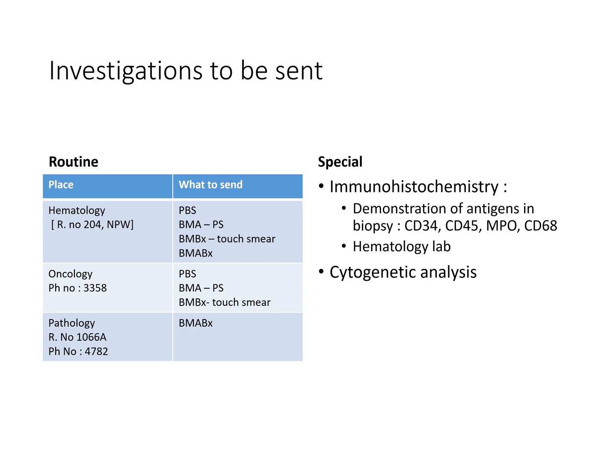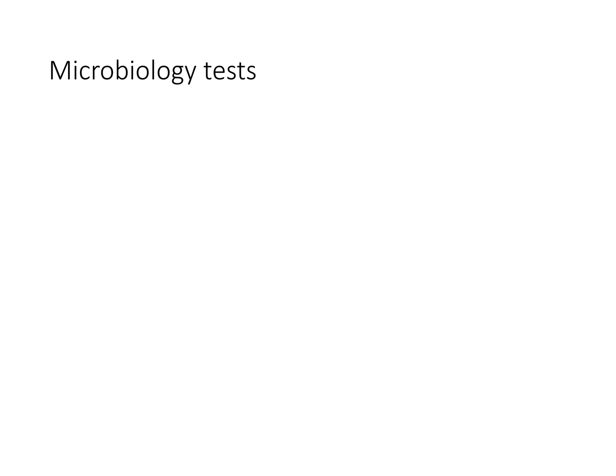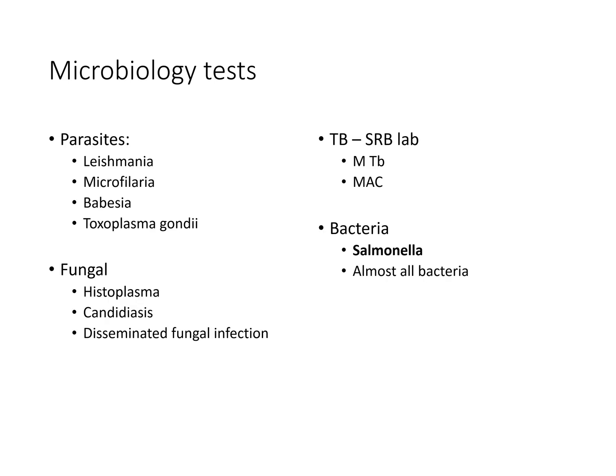Other special investigations include cytogenetic analysis, molecular genetics, electron microscopy, and NPM1 RT-PCR. As and when indicated, the sample should also be sent to the respective microbiological laboratories — bacteriology, mycology, parasitology, or SRB lab. At the end of the procedure, the resident must ensure that all samples sent are received by the laboratory, and when the report comes, must ensure that the reports are collected.